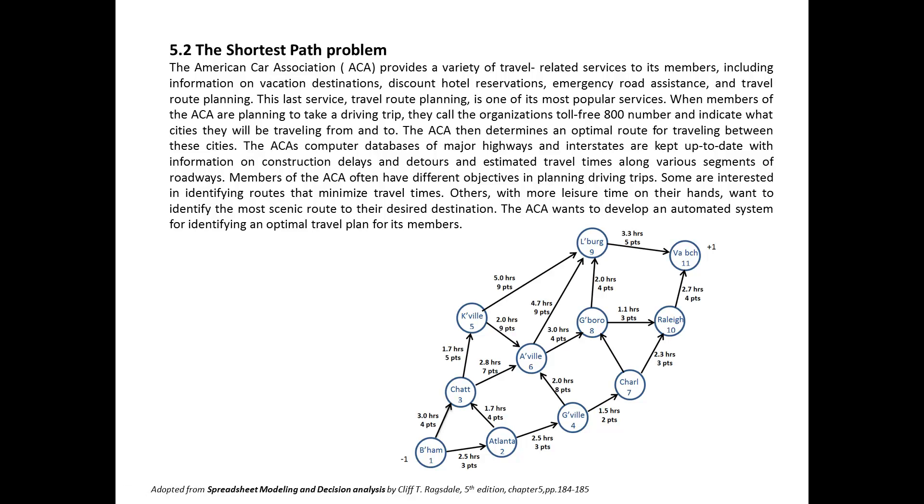This American Car Association is trying to develop an automated system for identifying an optimal travel plan for its members. And it mentioned that often they have different objectives in planning. Some people are interested in identifying routes that minimize the total travel time. And some others want to identify the most scenic route to their desired destinations.